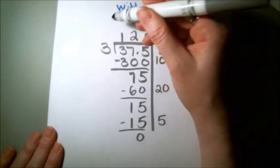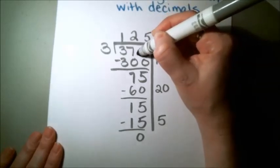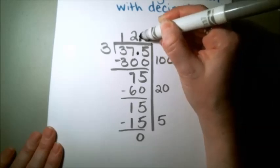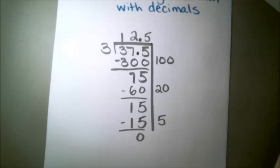But these aren't actually 1's, 10's, and 100's because this decimal is here in my original number. I'm just going to put it right up here directly above it. So my actual answer is 12.5, or 12 and a half. I'm going to show you another example with a little bit larger number.